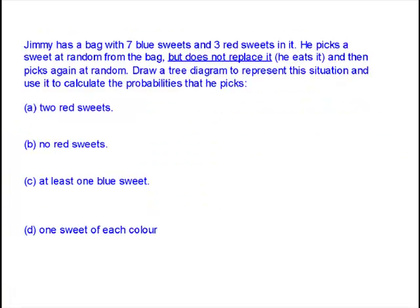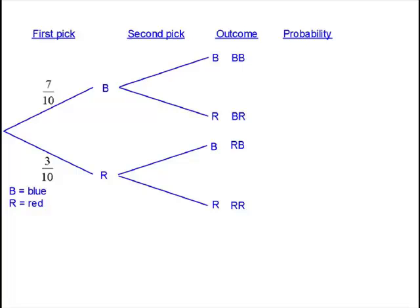Now, here's a similar question but it's slightly different. Jimmy has the same bag with seven blue and three red sweets in it. He picks a sweet at random from the bag but does not replace it. Instead, he eats it and then picks again at random. Once again, you're asked to draw a tree diagram and do these calculations of probabilities. What's the new situation?